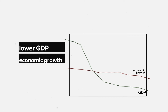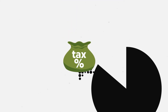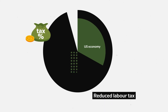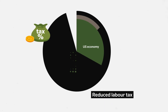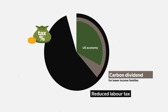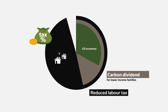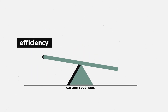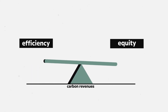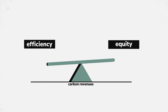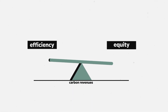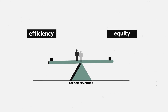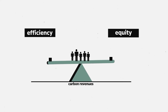Other revenue-neutral designs, such as reducing taxes on labor, could improve the US economy, but would be less favorable than a carbon dividend to lower-income households. So, it seems that there are clear trade-offs between efficiency and equity of different uses of carbon revenues. But is there a sweet spot to avoid harm on lower-income Americans and degrading economic efficiency?